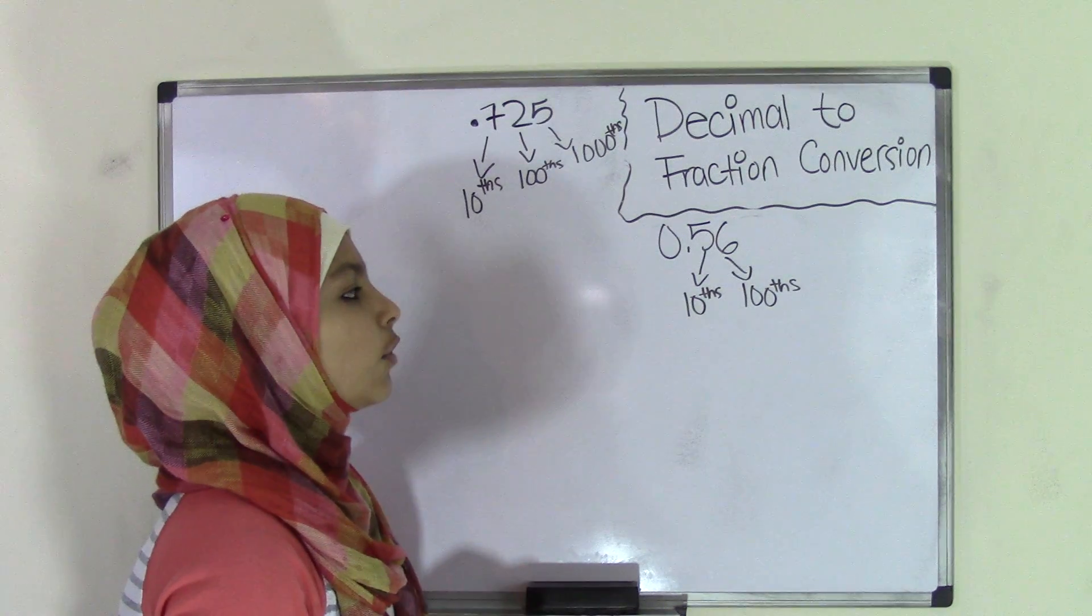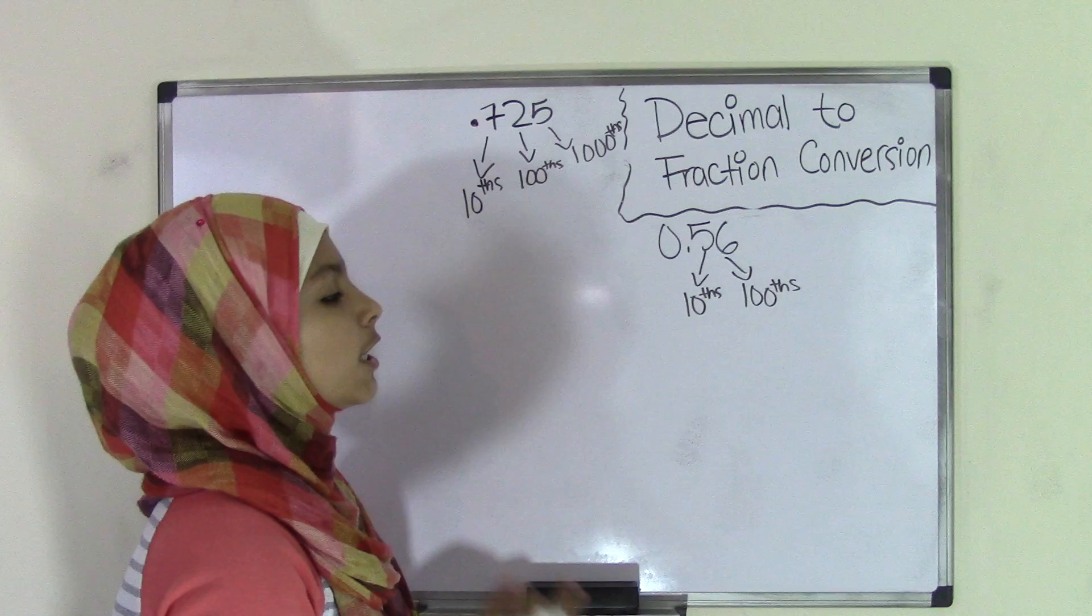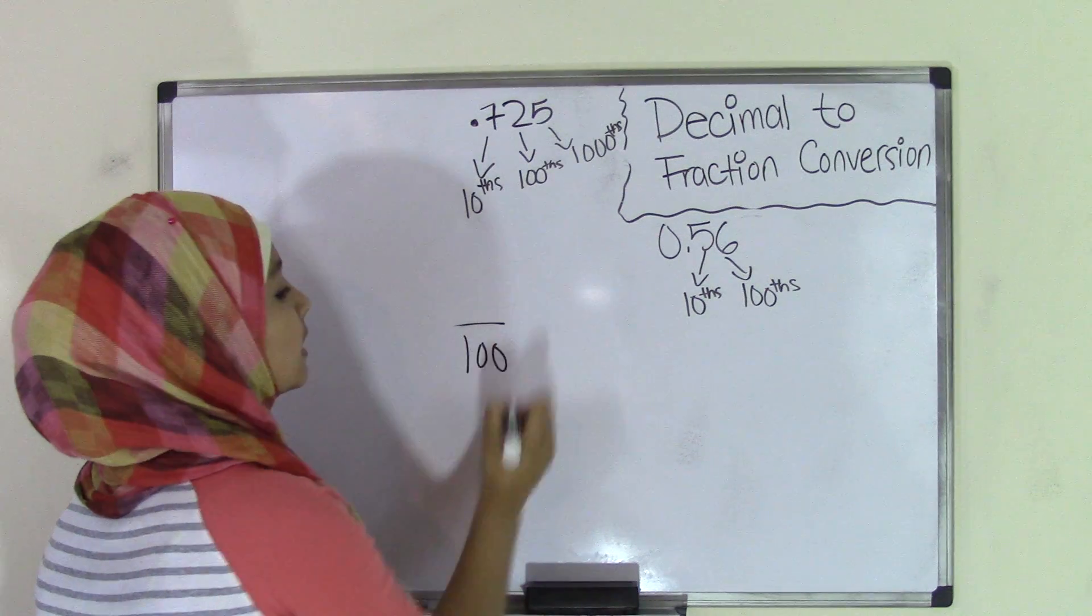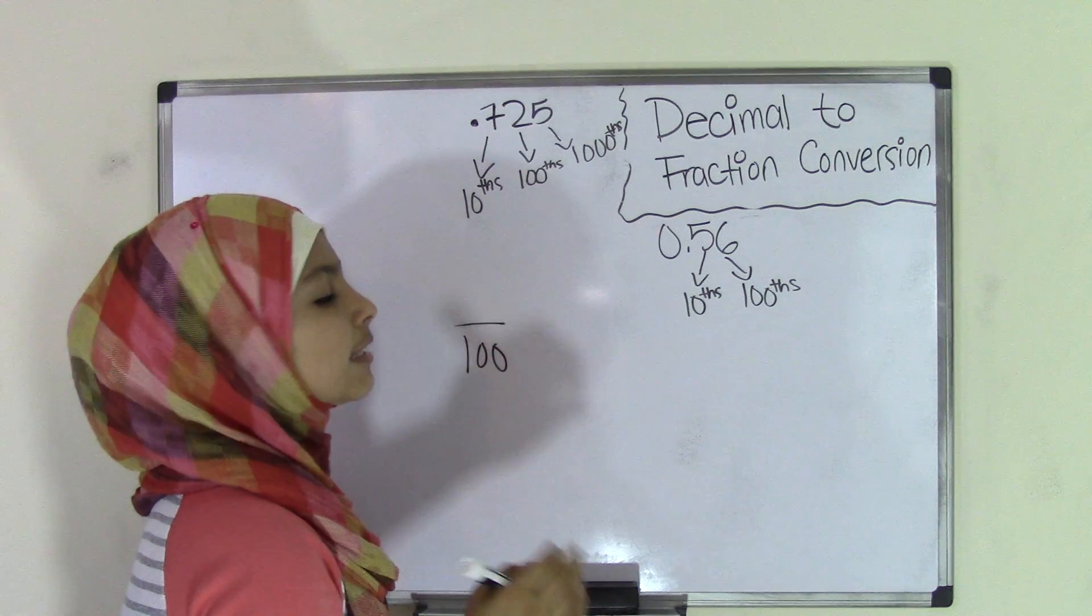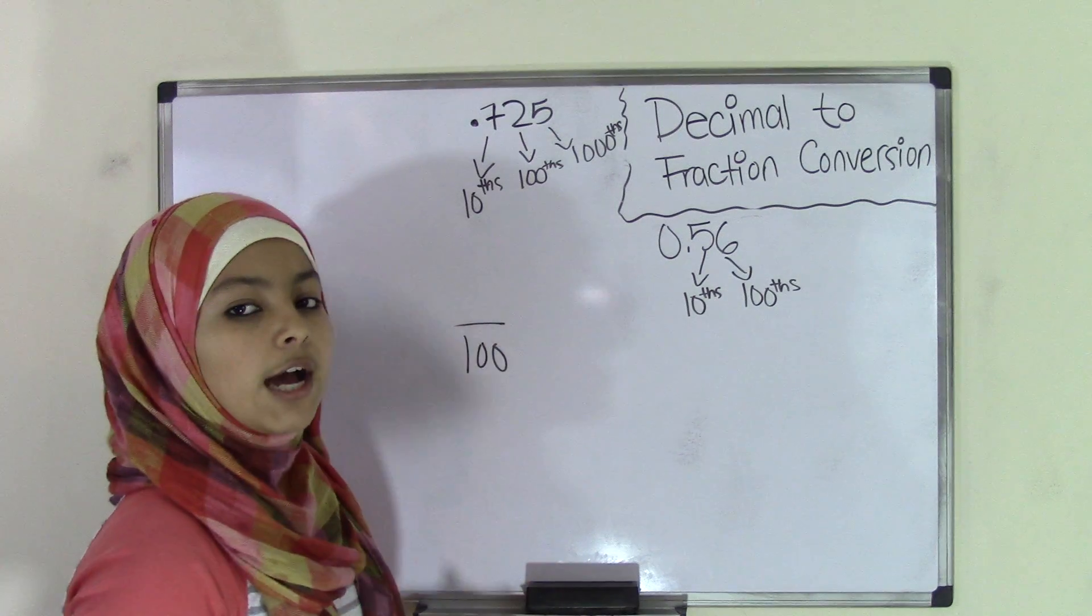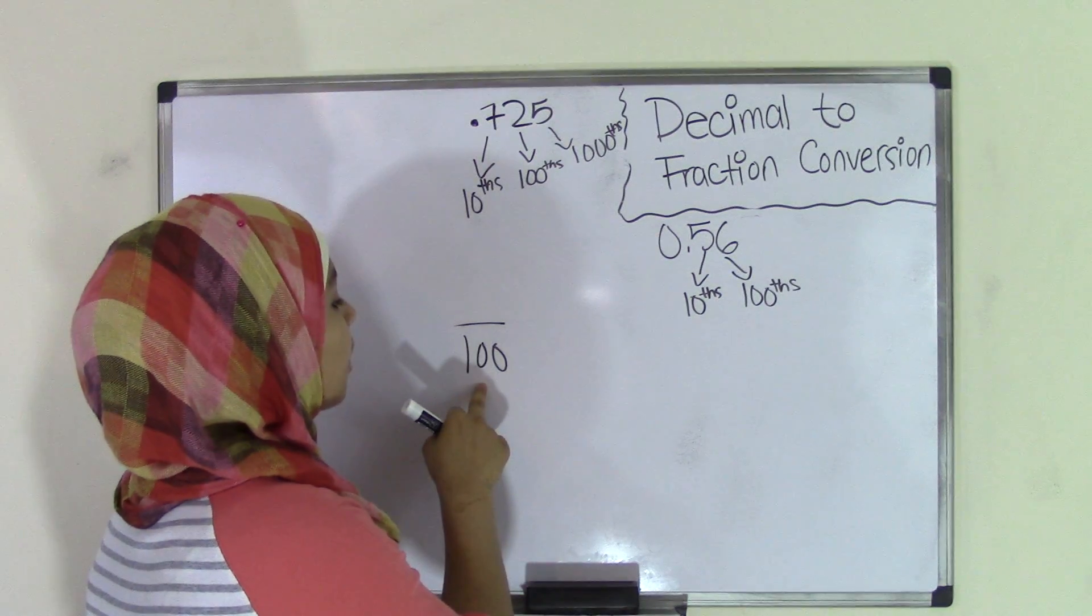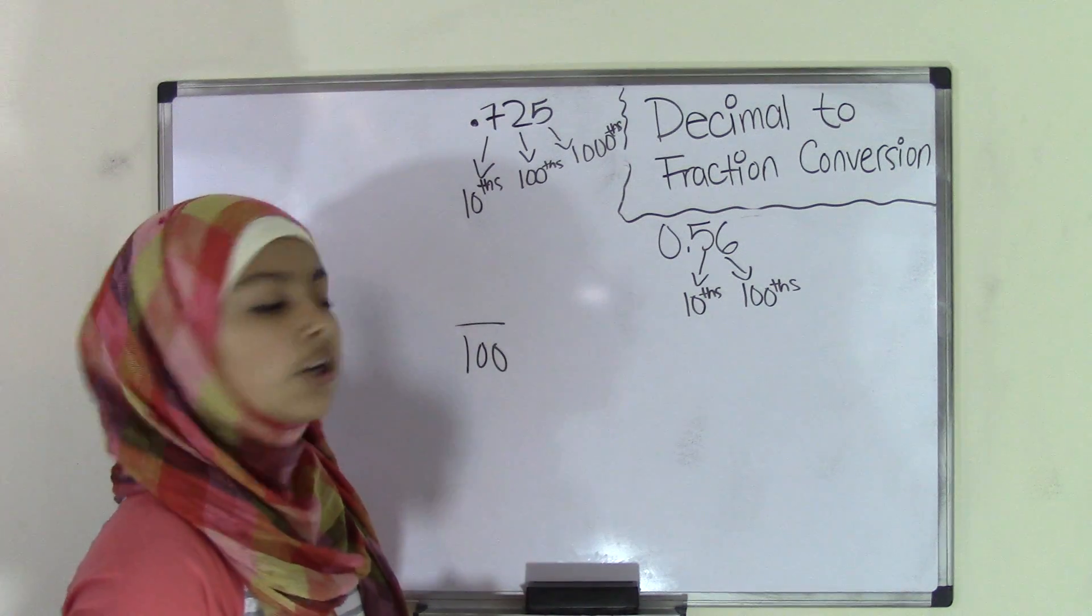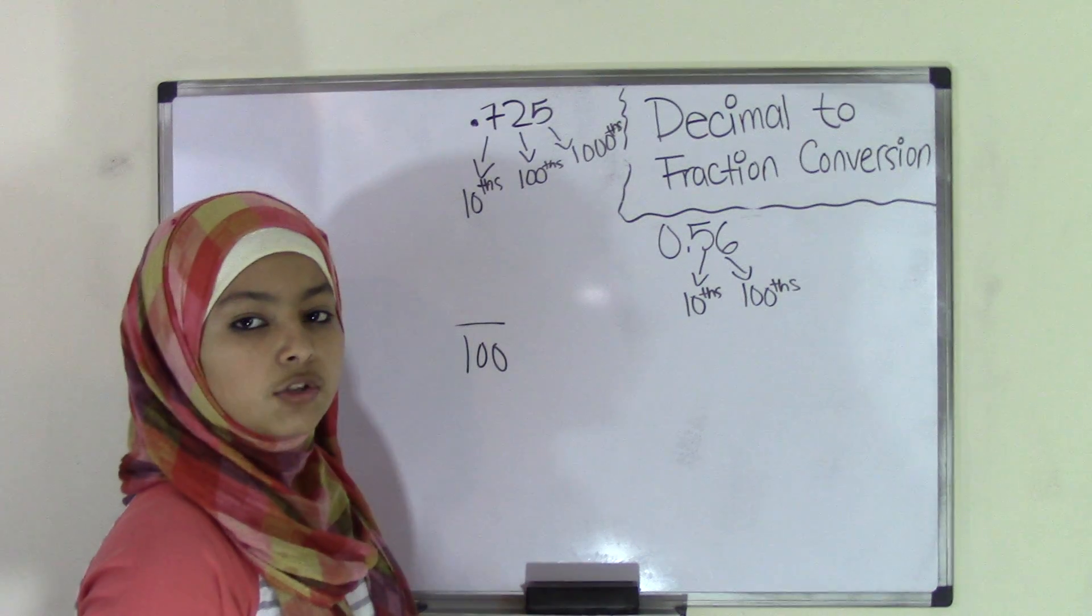And that is why when you're converting this, your fraction is going to have a denominator of 100. And reason being is that 56 has hundredths place value. So 56 is also known as 0.56 hundredths. So that's why your denominator is going to be 100. Now in order to find your numerator, you need to see how many hundredths do you have.